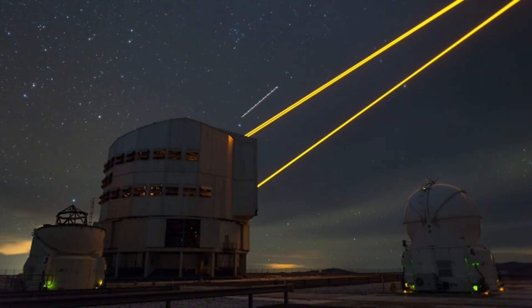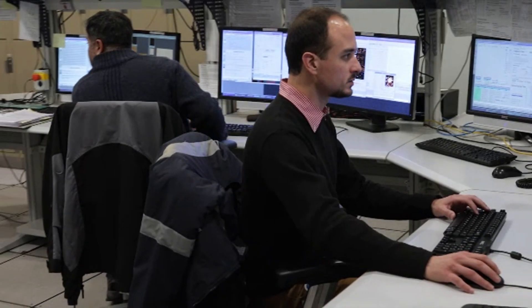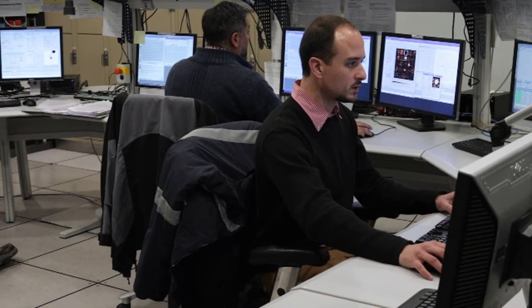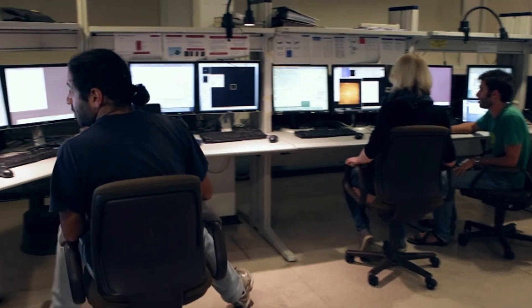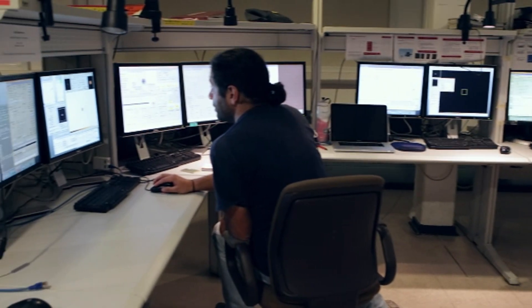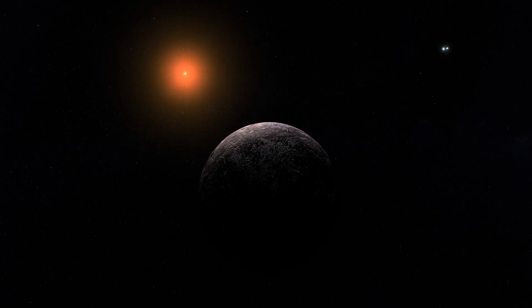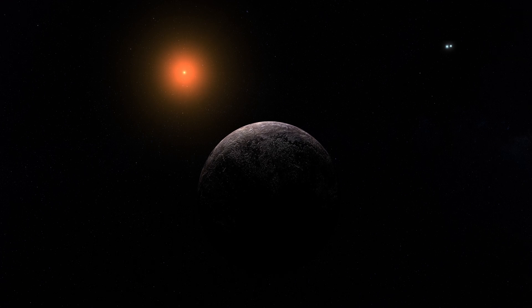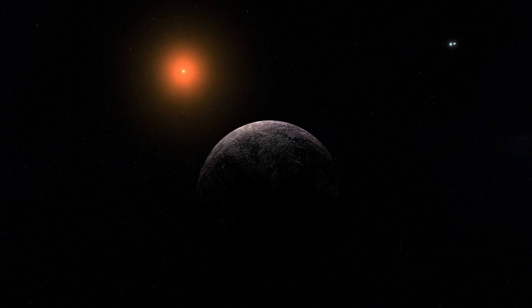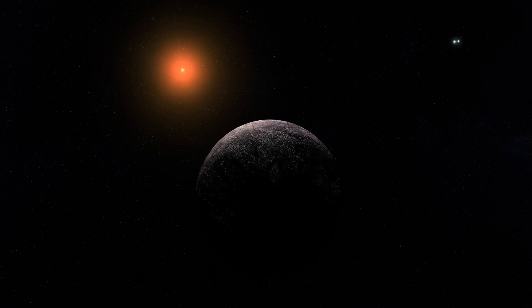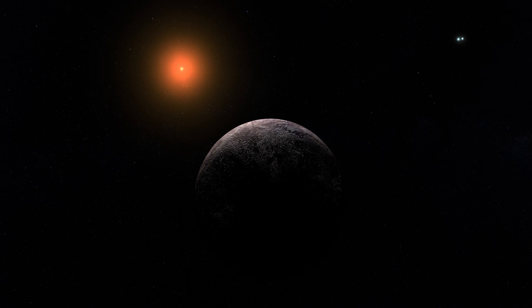Natural cosmic phenomena, like pulsars or magnetic stars, tend to emit broad, irregular signals, while narrow band transmissions are typically associated with technology. The precision of the signal, combined with its movement away from the telescope, suggests it's something deliberately generated, and it's something we've never seen before.